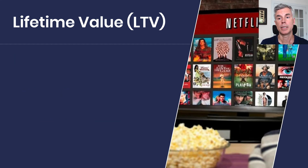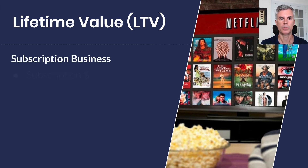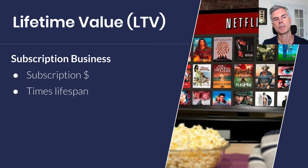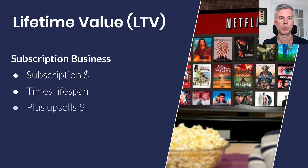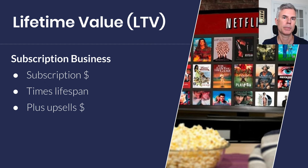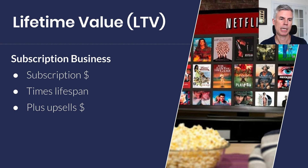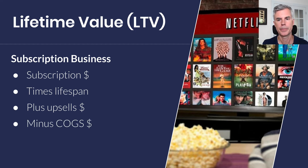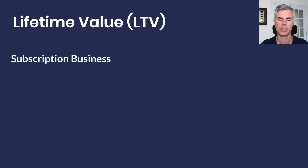Now let's look at a subscription model like Netflix. We subscribe and pay monthly, multiply by the number of months we stay subscribed, plus any upsell options — Netflix tries to get us to upgrade to a more expensive subscription. And again, we subtract out COGS. Netflix's subscription is $12.99 a month, and let's say we stay subscribed for 36 months — Netflix is pretty sticky.